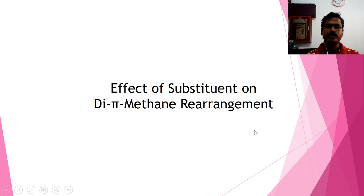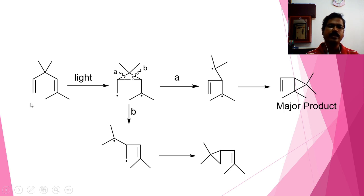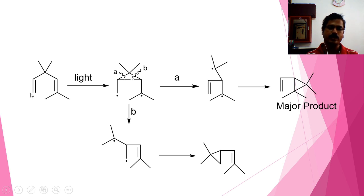To understand the effect of substituent on Di-pi-methane rearrangement, I have taken this substrate. The first carbon is not substituted, whereas the other terminal is substituted. This is a typical substrate that would undergo Di-pi-methane rearrangement. When you shine light on this compound,